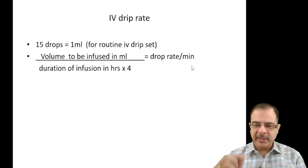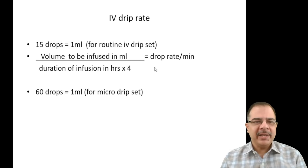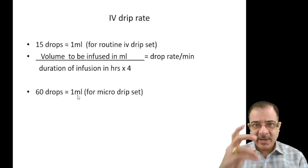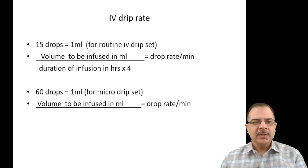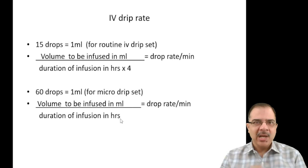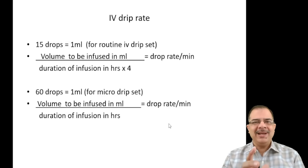For a micro-drip set: 60 drops equals 1 ml, which delivers one-quarter the volume of a standard set. The formula is: Volume to be infused (ml) ÷ Duration of infusion (hours) = drop rate per minute. This is a simple formula useful in ward and ICU practice.